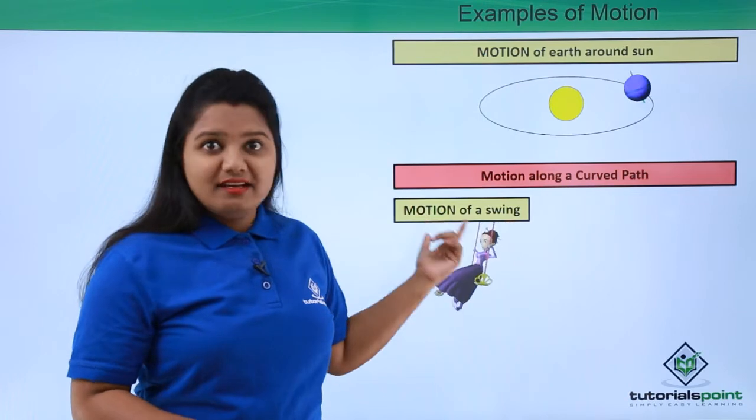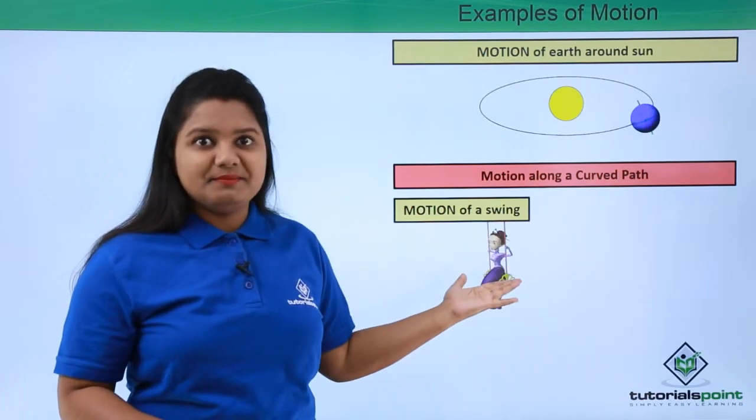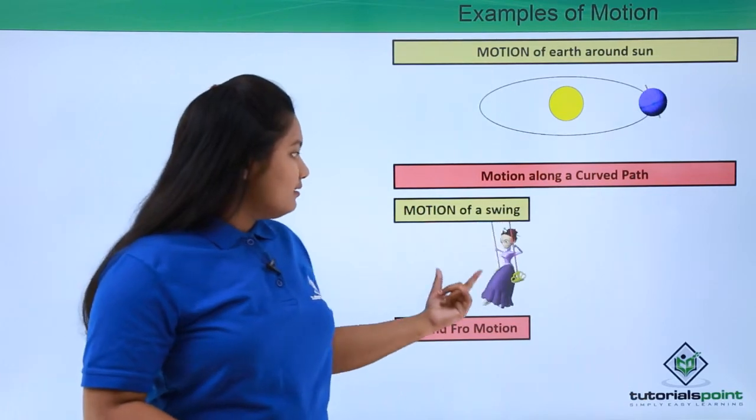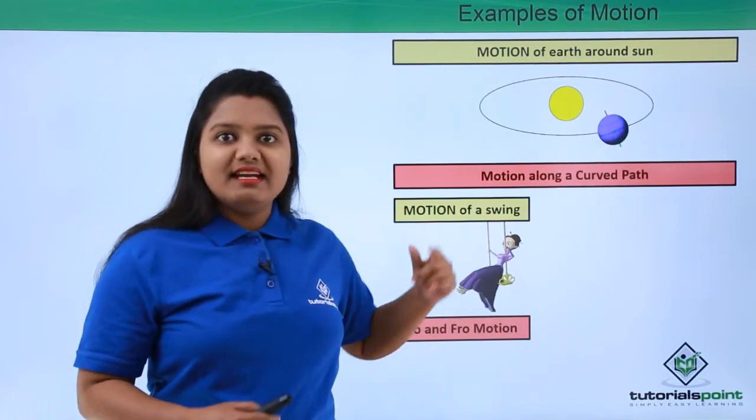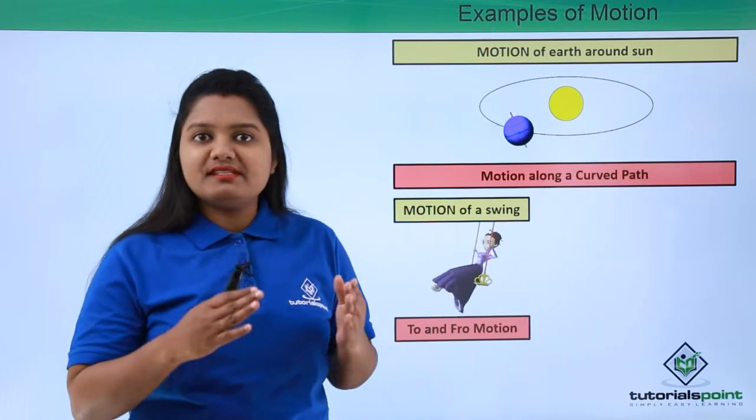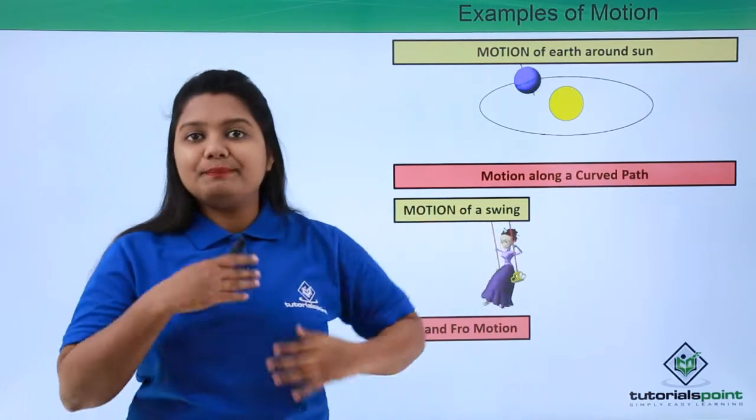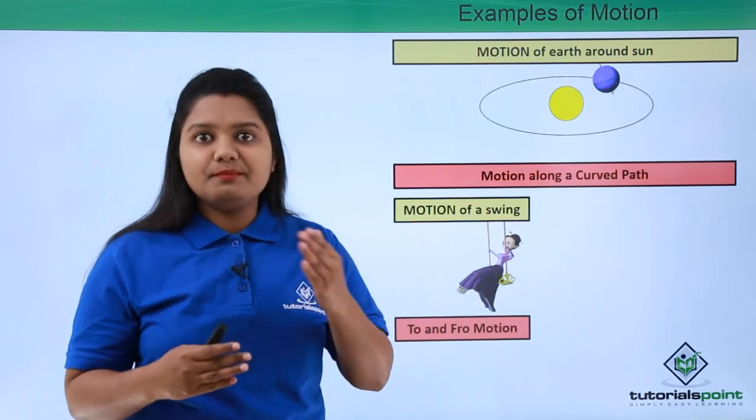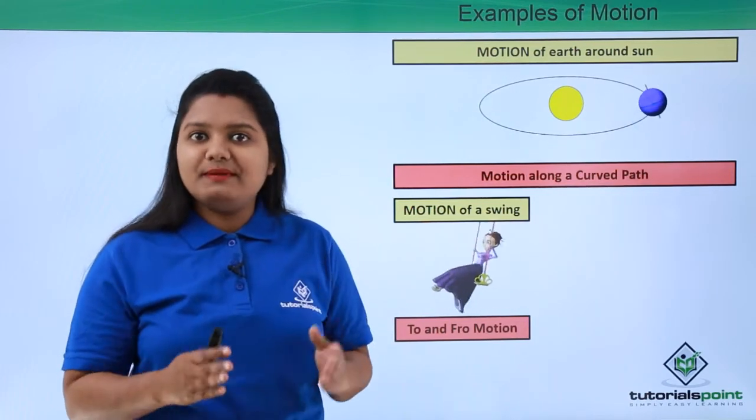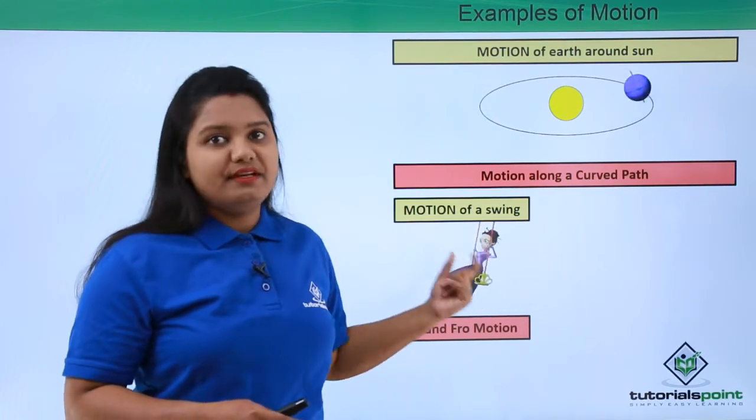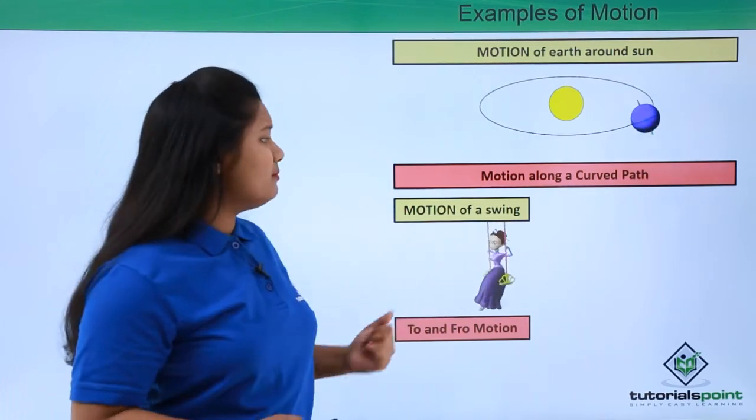Which is again not a straight line path, is a kind of to and fro motion. Now this to and fro motion is repeating itself after a certain period of time. Now such motions which repeat itself after a certain period of time are said to be periodic motion. So this motion of a swing is a periodic motion.